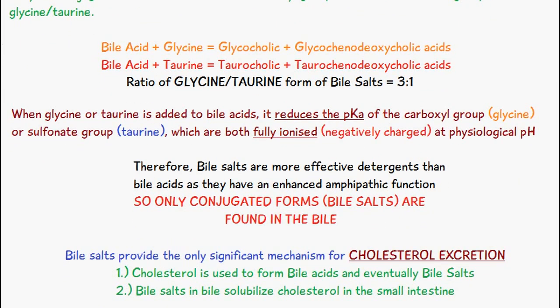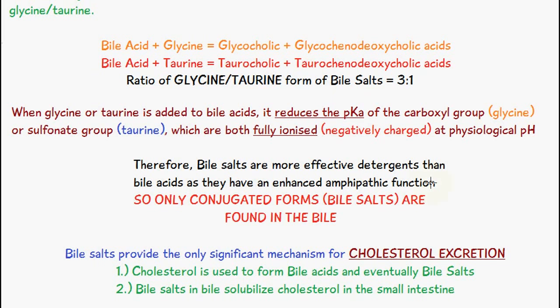When glycine or taurine is added to bile acids, it reduces the pKa of the carboxyl group — in the case of glycine — or the sulfonate group — in the case of taurine. Both groups are then fully ionized, which is another way of saying very negatively charged at physiological pH. Therefore, because bile salts are more negatively charged and fully ionized, they are more effective detergents than bile acids due to their enhanced amphipathic function.